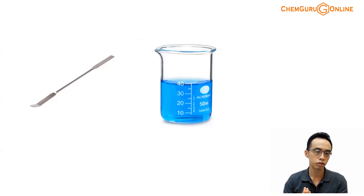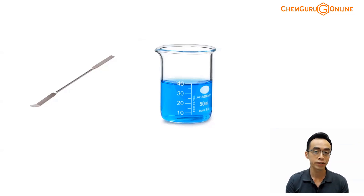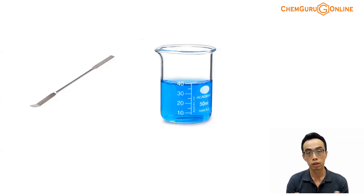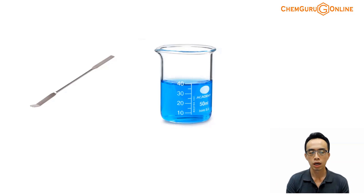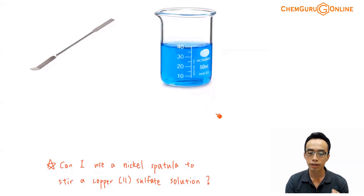What we want to go through today is pretty interesting: can I use this nickel spatula to stir a solution of copper(II) sulfate? At the beginning this question seems a bit trivial, because if we have apparatus that we can find in the lab, most of the time they should be stable. So we should expect this nickel spatula to be stable and usable to stir copper sulfate solution. But it turns out we actually cannot, and let us run through why. The concept is under electrochemistry.